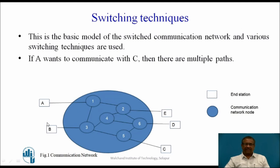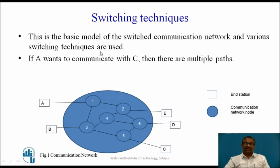These are end stations and they want to communicate with each other. But to facilitate this, what we require is a communication network shown in this circle. Six different nodes are there which are interconnected, and by which the message from say end station A can be transmitted to E through different nodes in the communication network. This is the basic model of the switched communication network and various switching techniques are used.